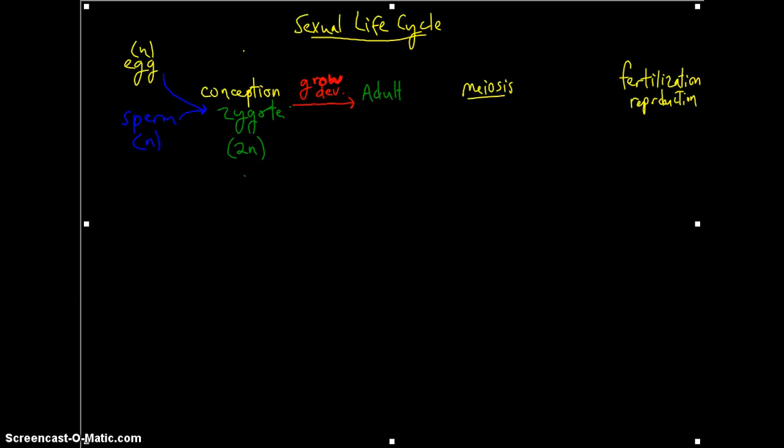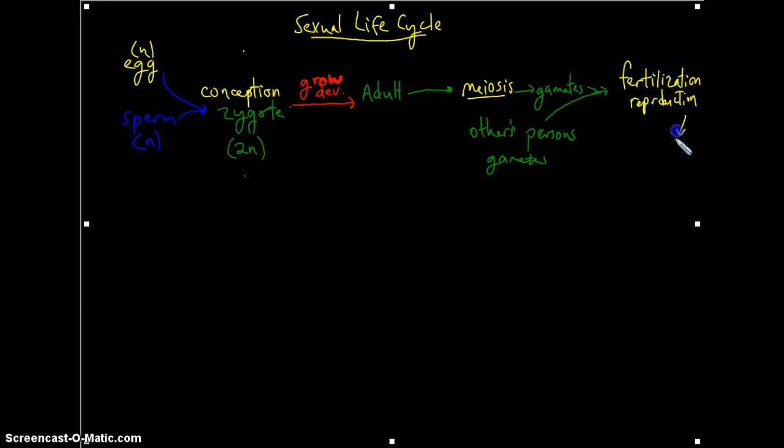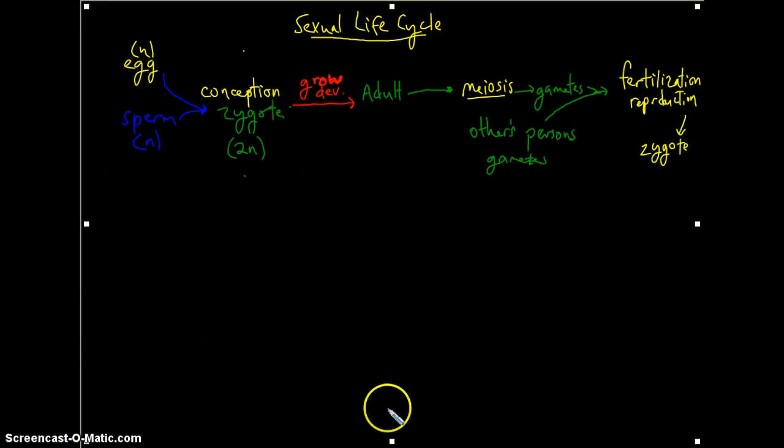So at that point, the adult organism is able to have germ cells undergo meiosis and produce these gametes. And then if they find someone that shares their interests, they also like the colts and the cubs and things of that nature, then the other person's gametes can then combine with theirs in the process of fertilization and reproduction, at which point you create a brand new diploid zygote and start the whole process all over again.